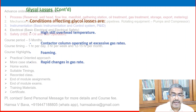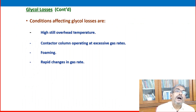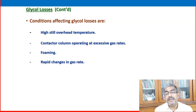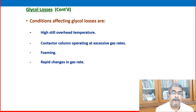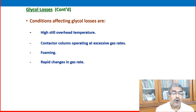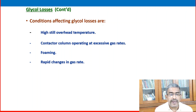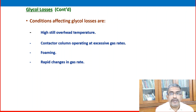I hope you have understood the dehydration process parameters which severely affect the performance of the absorber, still column, and the entire dehydration process. In our next class, we will discuss how to read the P&ID and understand the process alarms, variable set points, and trip conditions.